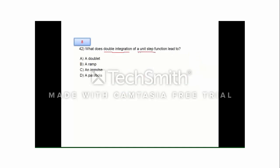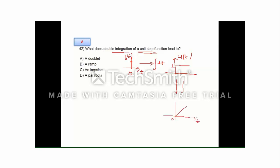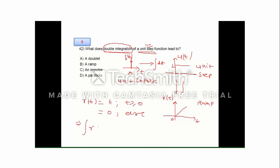Question number 8: what does the double integration of a unit step function lead to? The unit impulse δ(t) exists only at t = 0. Integrating it gives the unit step u(t), which has amplitude 1 from 0 to infinity. Integrating the unit step gives the ramp signal r(t) = t for t ≥ 0. Integrating the ramp once more gives t²/2, which is a parabola. The answer is option D, a parabola.